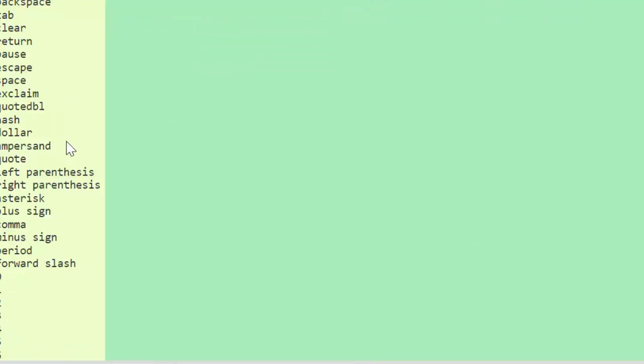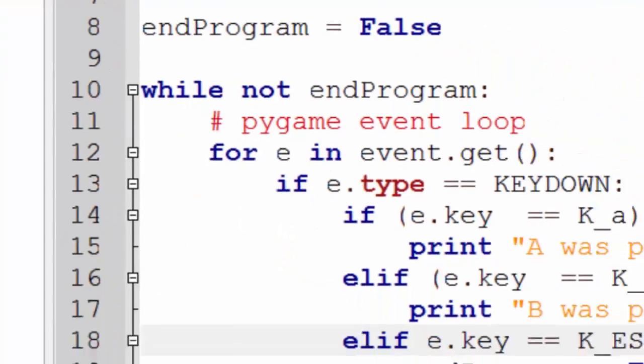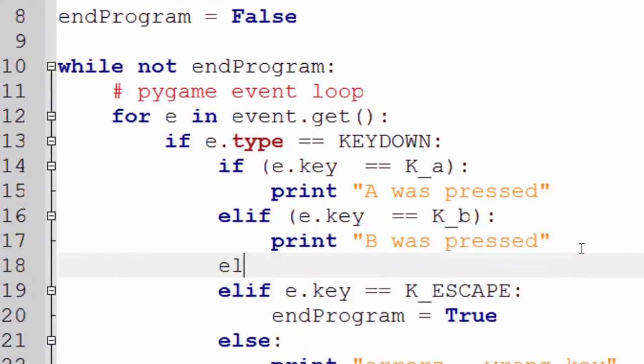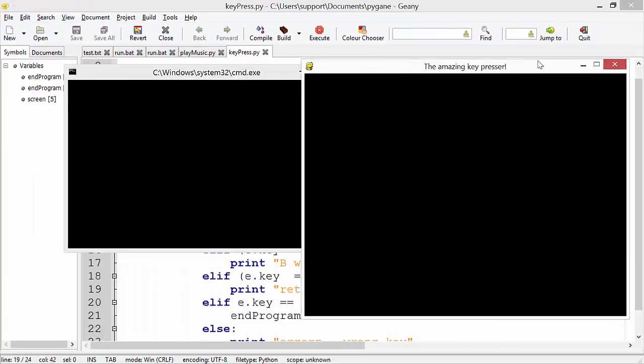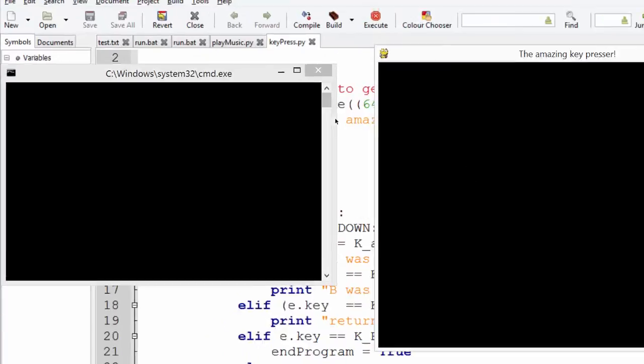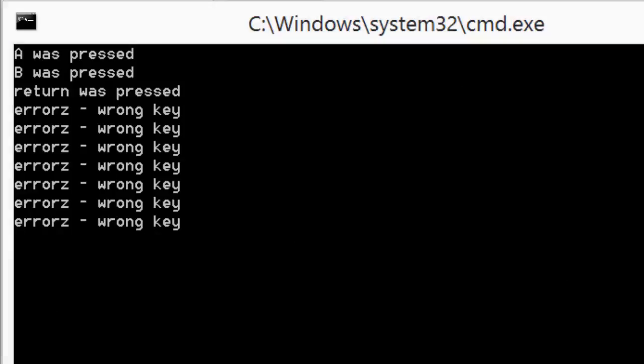So if you want to add another one, for example, let's say I want to do a return key. So k underscore return. All I would have to do is go elif. I'm going to just copy that, because I'm lazy. K underscore return. And I want to print return was pressed. So I run this code. What should happen is when I hit an A key, print it out, B, return. Any other key does that. Escape will quit the program.